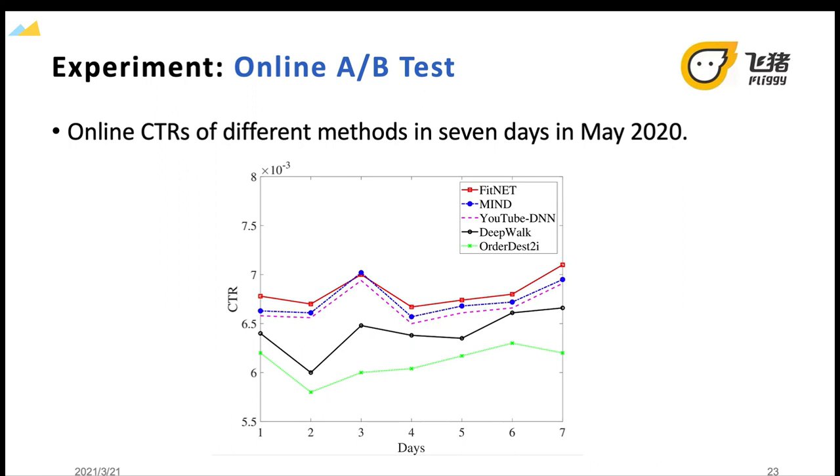We also conduct online experiments by deploying FitNet to handle real traffic and personalized interfaces of mobile Fliggy app. It is clear that FitNet outperforms other recommendation methods, which indicates that FitNet generates better representations for users by taking their itinerary information into account.